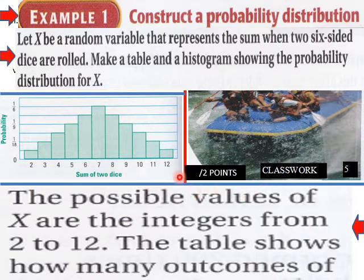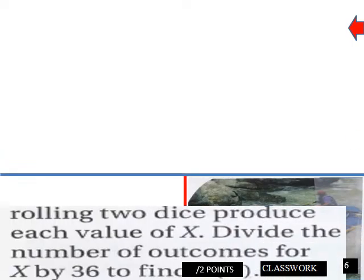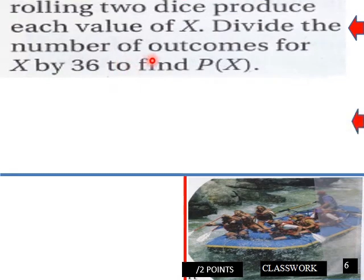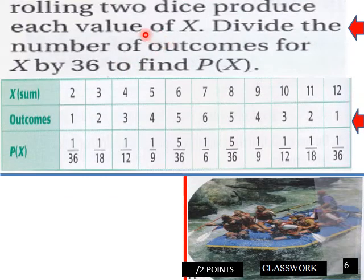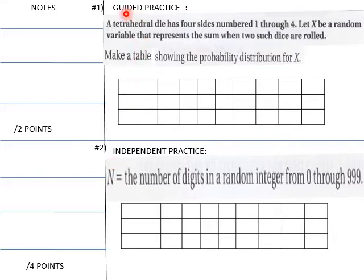The possible values of X are the integers from 2 to 12. The table shows how many outcomes of rolling two dice produce each value of X. Divide the number of outcomes for X by 36 to find the probability of X. So you have 36 actual events that are possible here, and then for these outcomes, you put them over 36 and then you simplify them away.